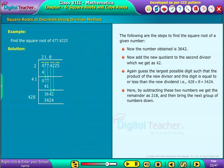Here, by subtracting these two numbers, we get the remainder as 218. And then, bring the next group of numbers down. Again, adding the new quotient to the third divisor we get as 436.